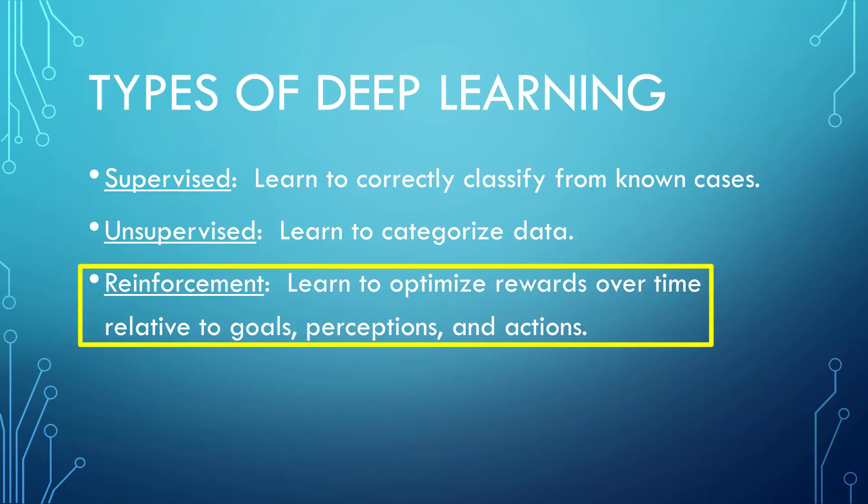In reinforcement learning, there are goals, perceptions, actions, and rewards. The neural network learns behaviors that optimize the rewards over time. This is the most relevant for game AI and is what ML Agents does — what we will focus on for the rest of this video and this video series.